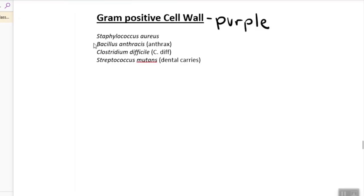Some examples of pathogens that are gram-positive are Staphylococcus aureus, which we all carry in our normal flora, but also there are pathogenic strains like MRSA, which is methicillin-resistant Staph aureus, Bacillus anthracis which causes anthrax, Clostridium difficile, and Streptococcus mutans which causes dental cavities.